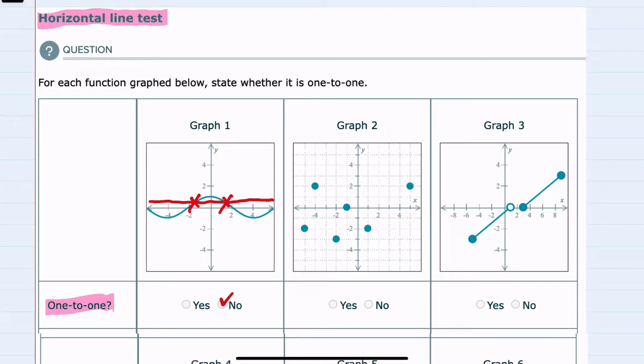And if I look at graph two, I could also draw a horizontal line here. Again, any horizontal line that fails by crossing the graph twice means it is not one-to-one.